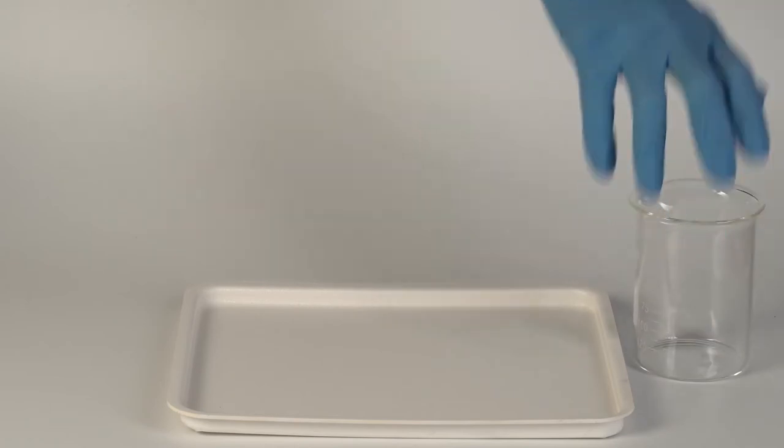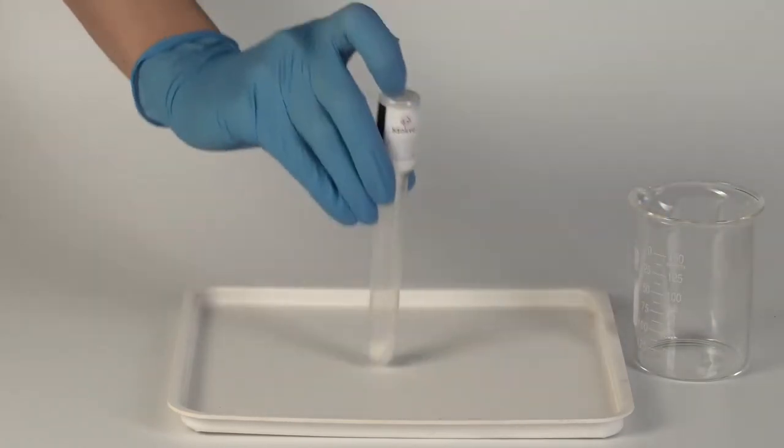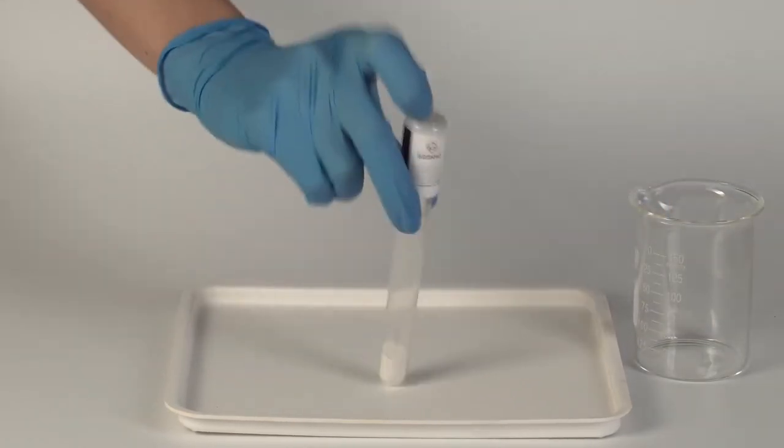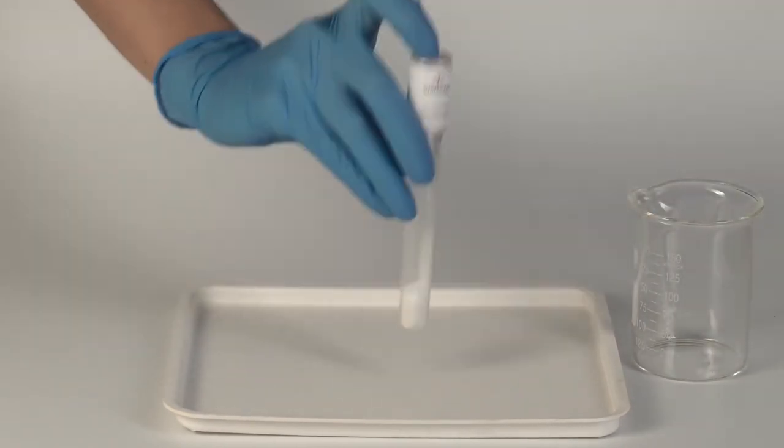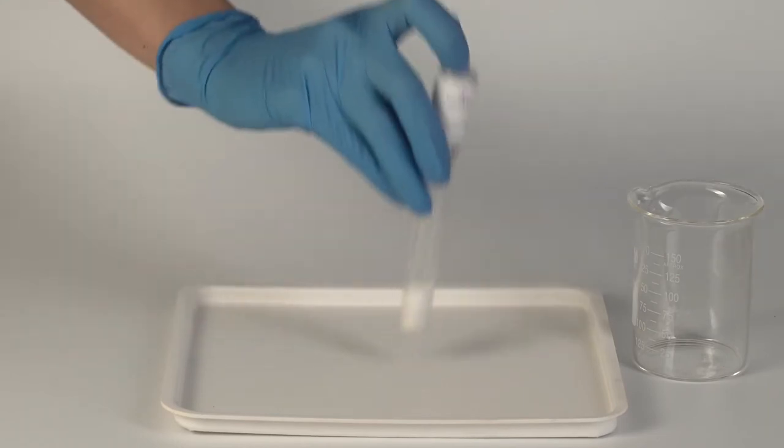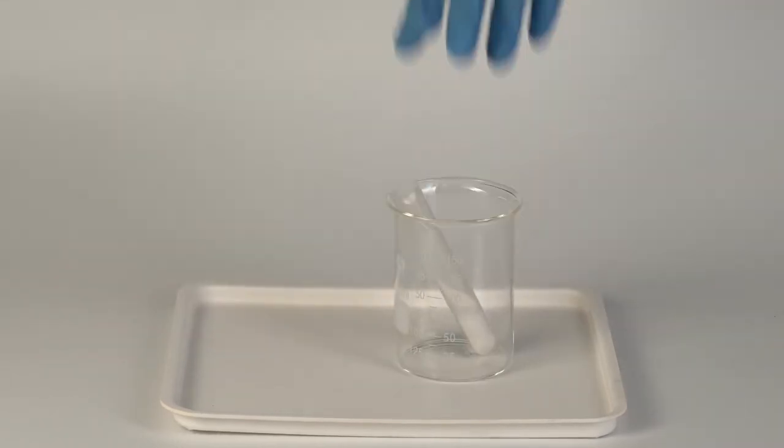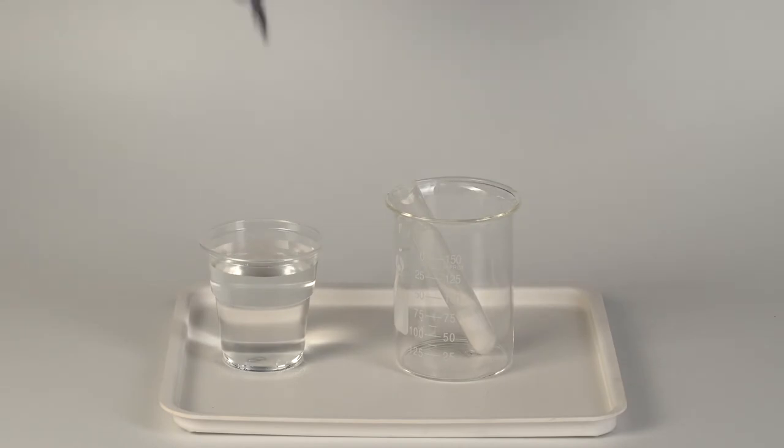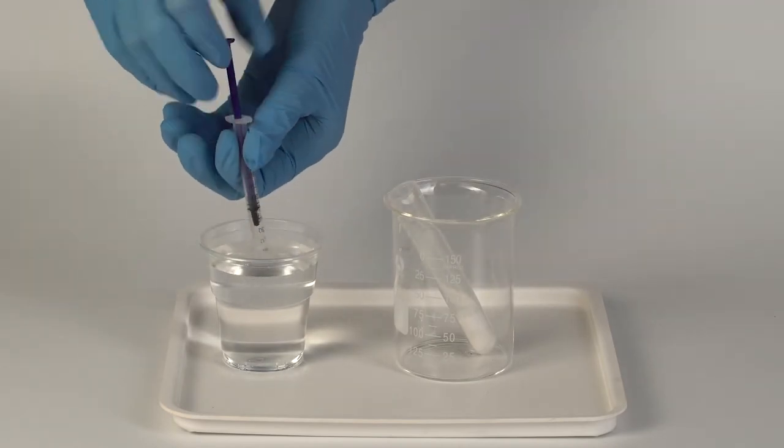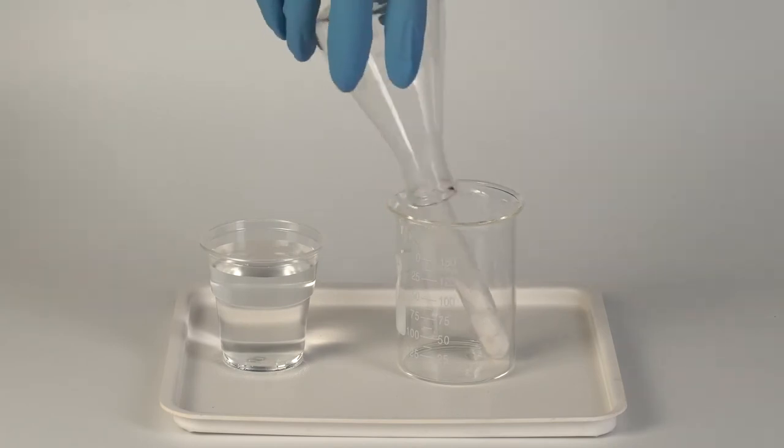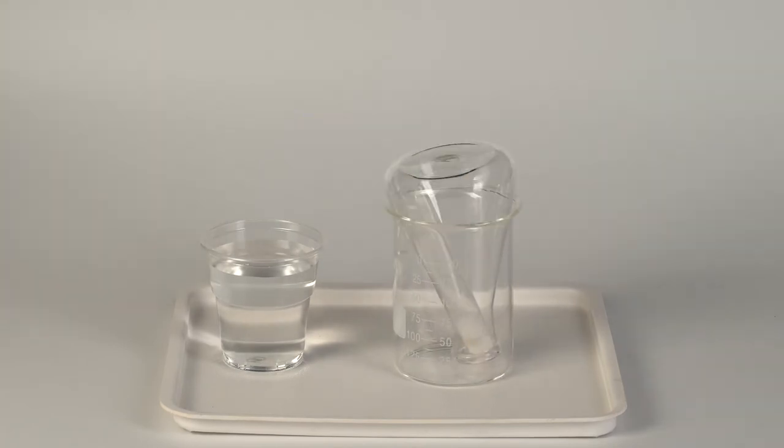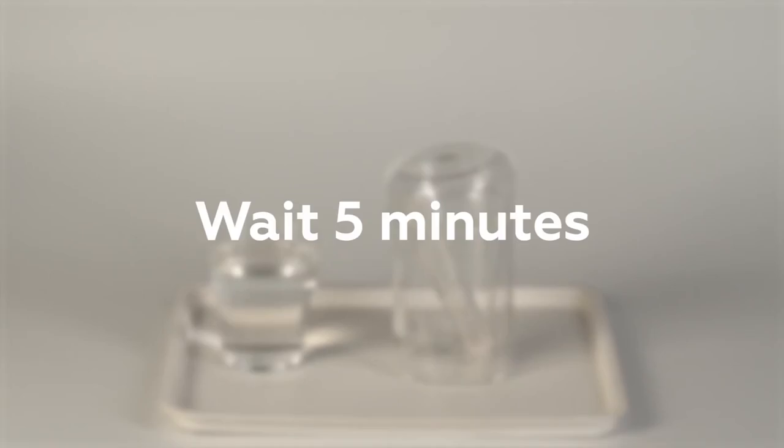Pour a whole bottle of calcium oxide into the plastic test tube. Then add all of the ammonium chloride. Now put the test tube into the beaker. Using a syringe, measure 0.5 milliliters of water and add it to the test tube. Cover the test tube with the flask and wait for approximately 5 minutes until the mixture stops bubbling.